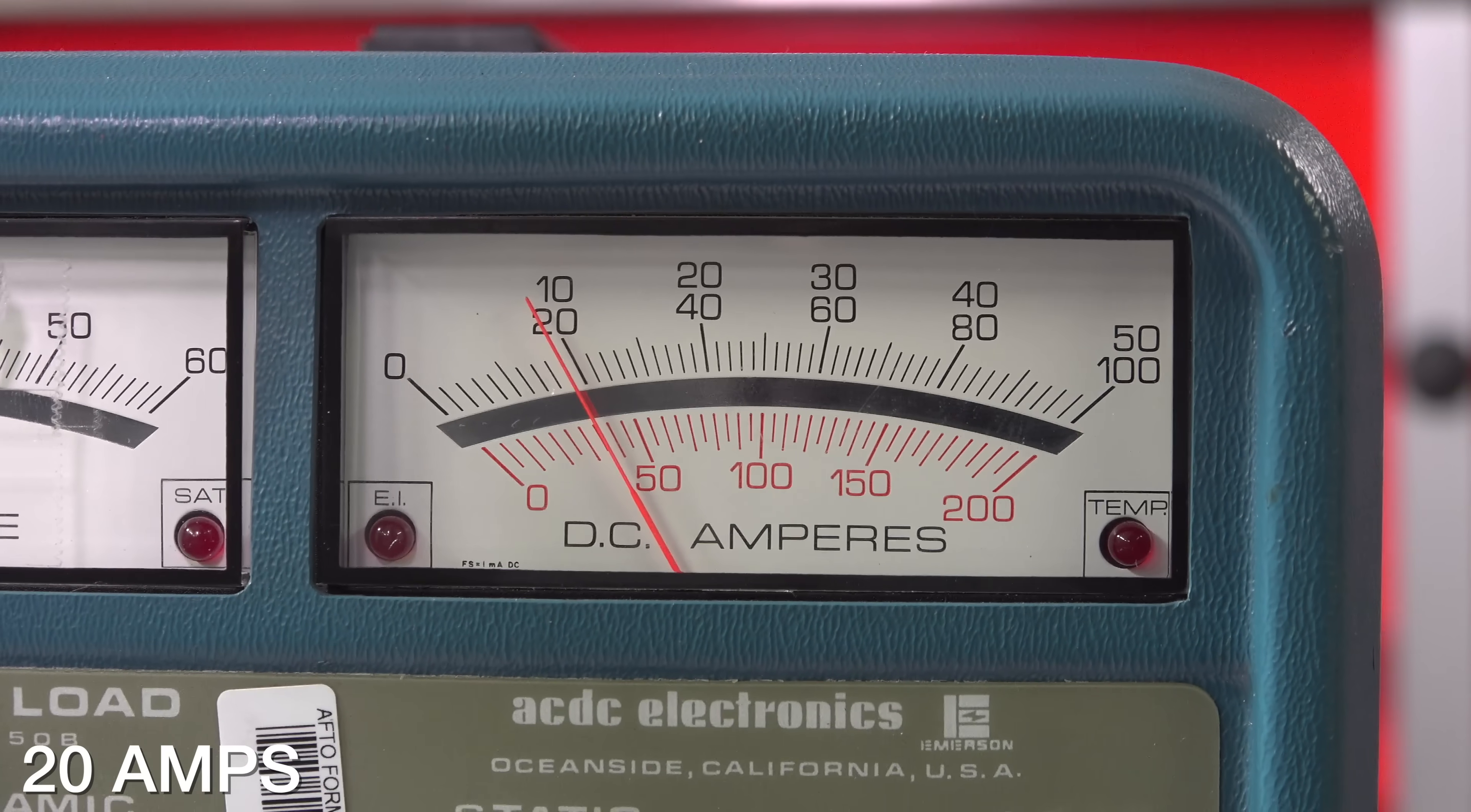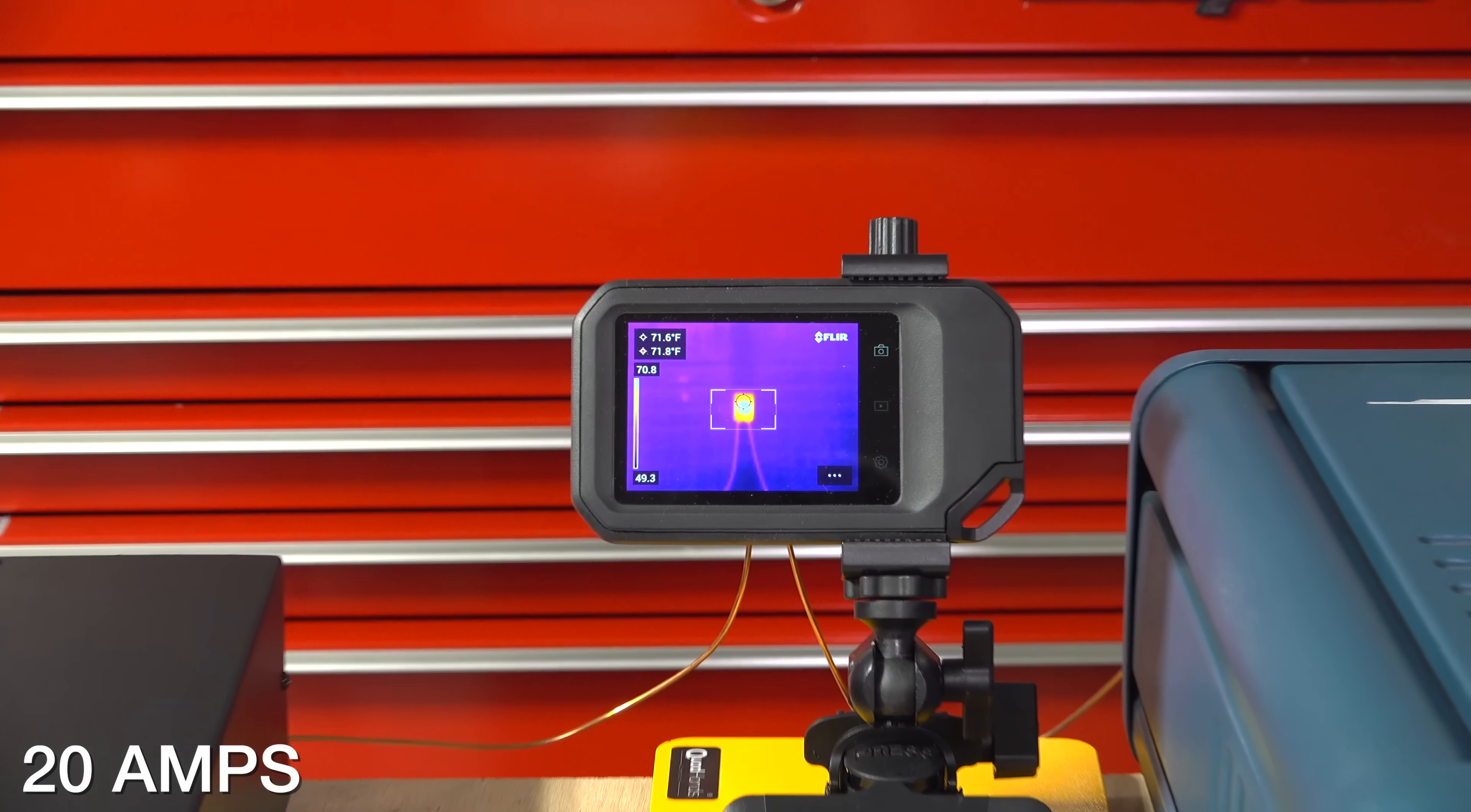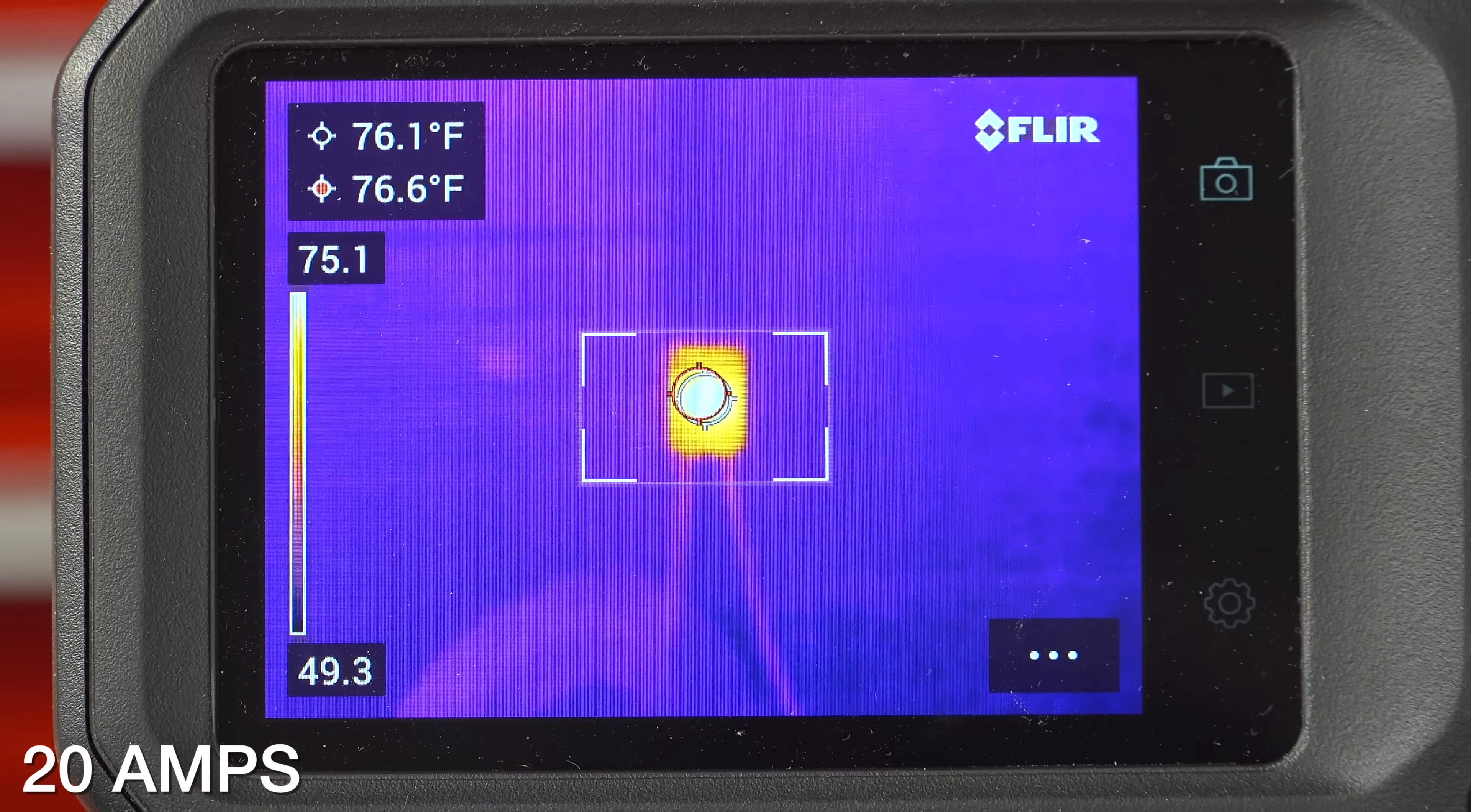Remember, in your house, you're usually going to have 15 or 20 amp circuits. So this connector is actually rated to be used on them. Now we've just broken the 10-minute mark. We're still at 20 amps and the connector is at about 72 degrees. I added my clamp-on ammeter just to triple check my numbers and you can see at the 15-minute mark, the connector is still only about 77 degrees.